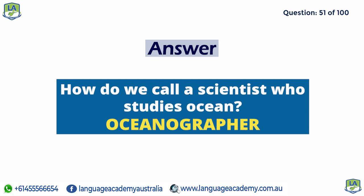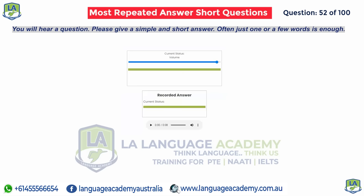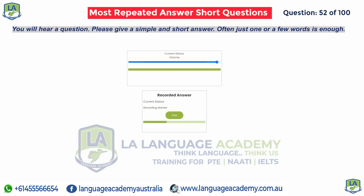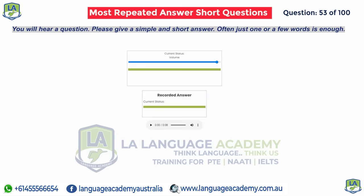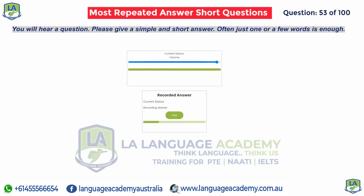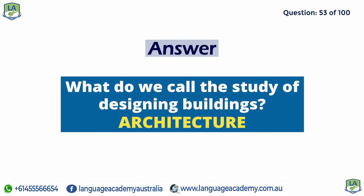How do we call a scientist who studies the ocean? Oceanographer. Which word is connected with our mental state — physiological or psychological? Psychological. What do we call the study of designing buildings? Architecture.